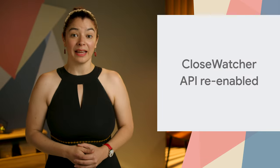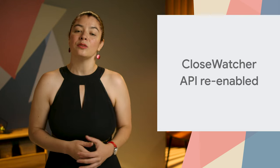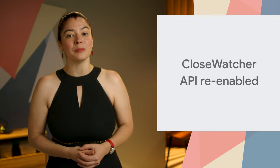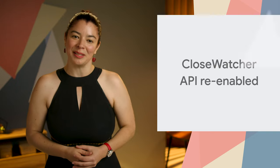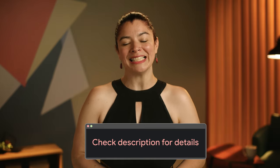For the dialog and popover elements, the Close Watcher API makes it easy to handle close requests, like the Escape key on desktop platforms or the back gesture on Android. This feature was originally shipped in Chrome 120, but was disabled because of an unexpected interaction with the dialog element. It has been re-enabled in Chrome 126 after improvements to minimize the previous problems. For samples and a demo, check out the link in the description.